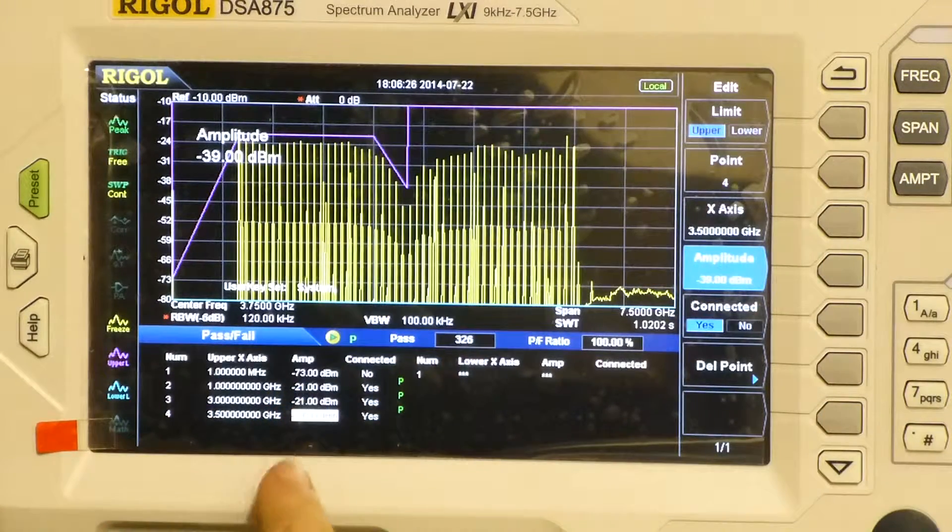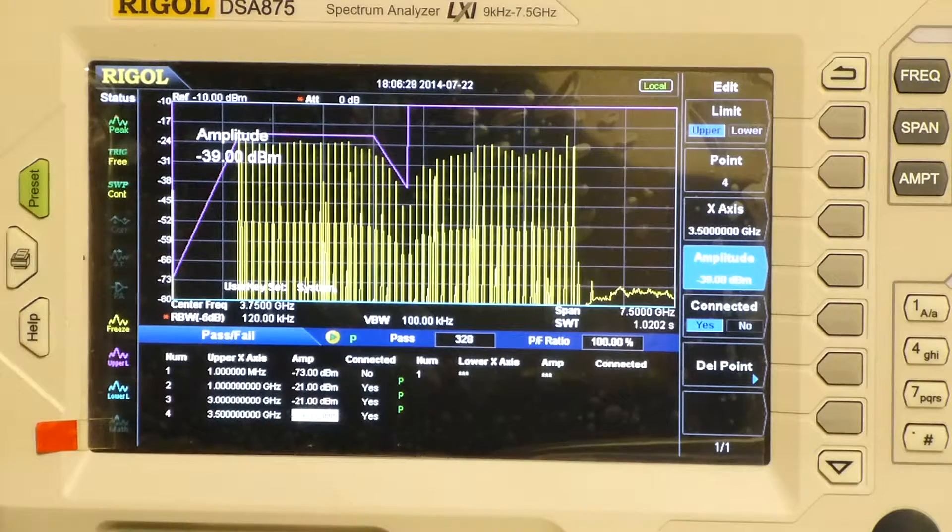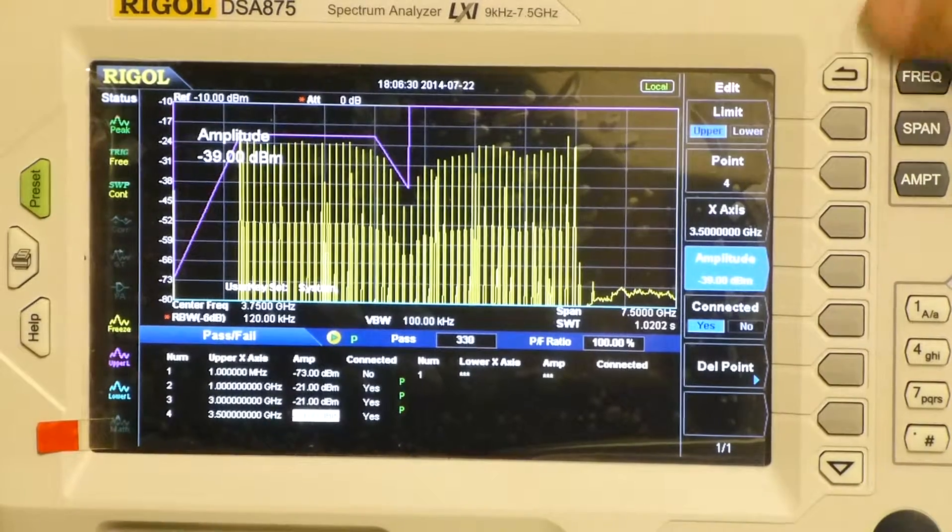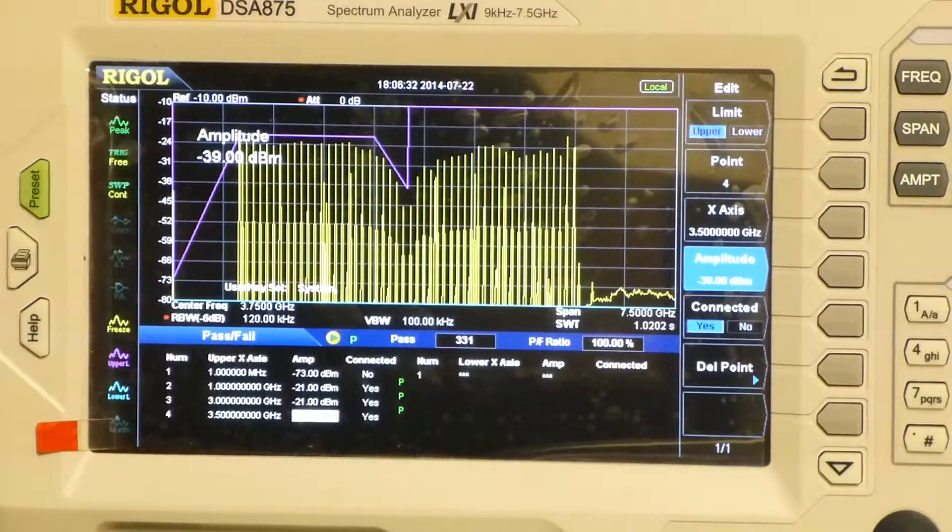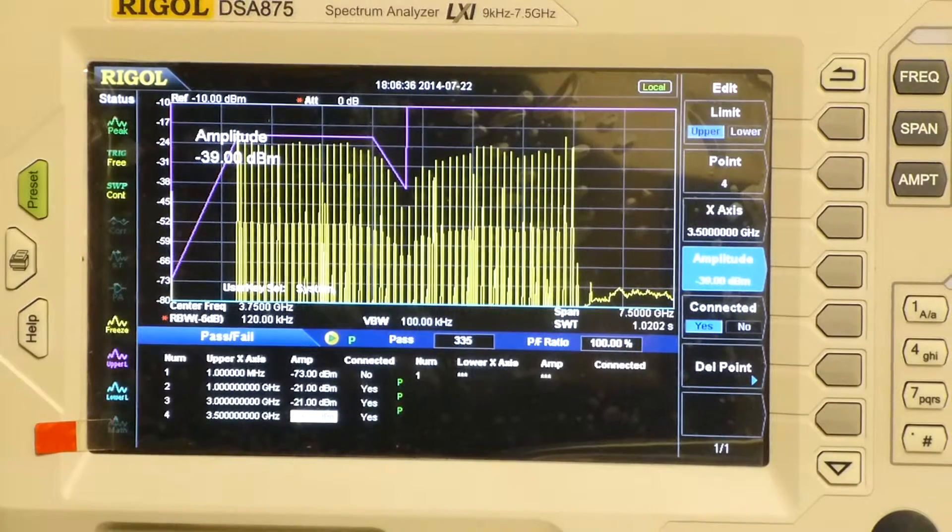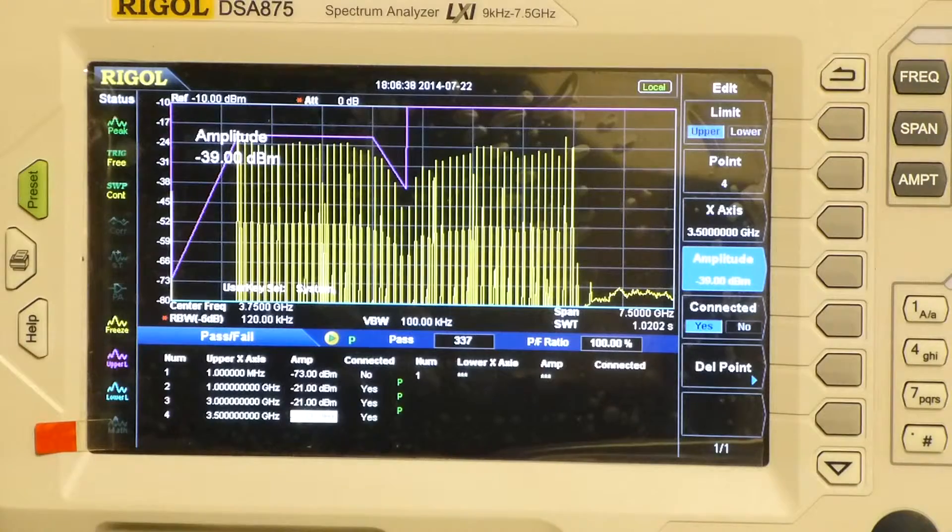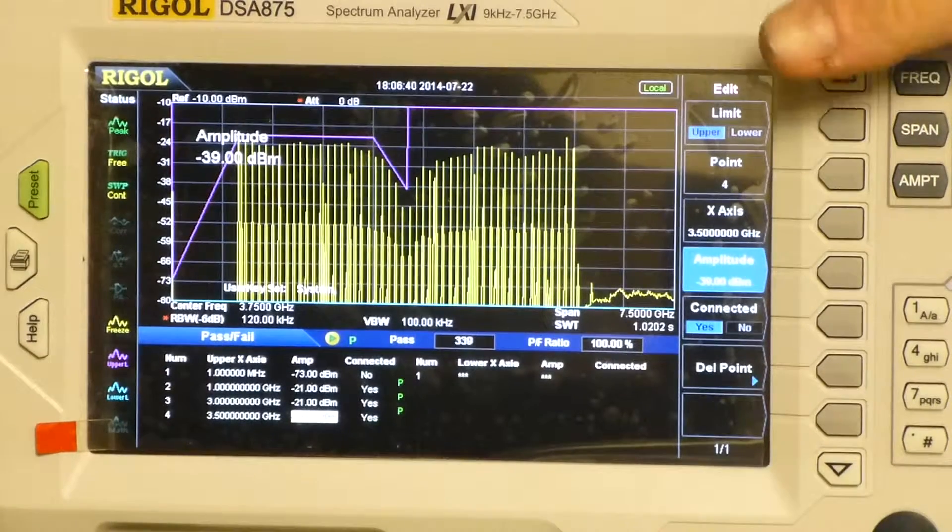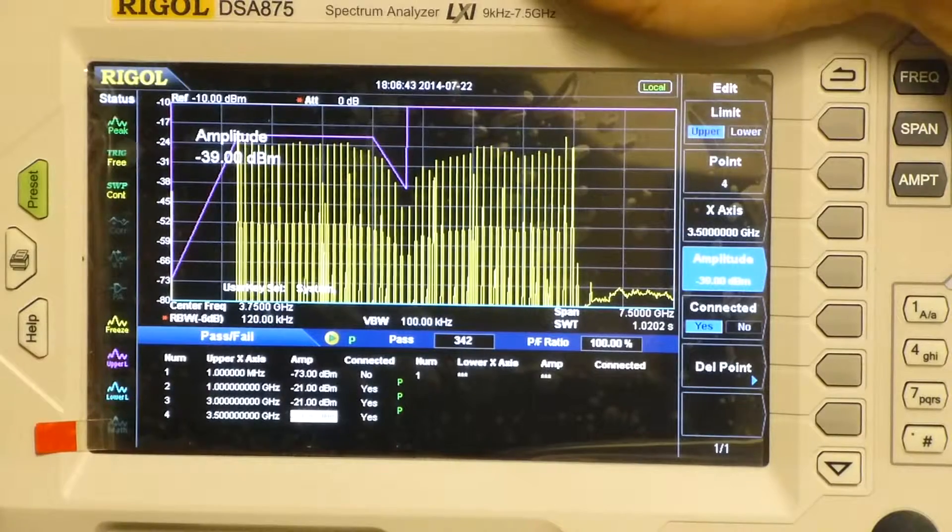You can also save and print out your pass-fail table so that you've got an easy to recall limit line for your pre-compliance emissions standard. So that is how to set up a display line and a pass-fail limit line using the DSA800 series spectrum analyzers to assist your EMI and pre-compliance.